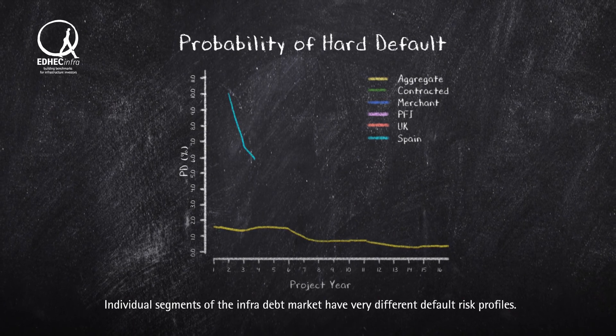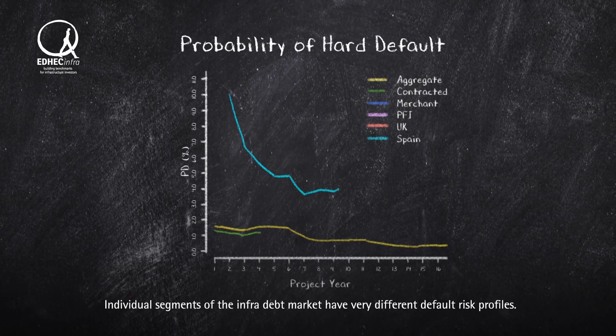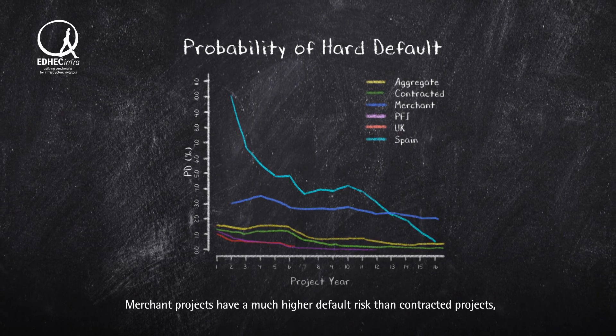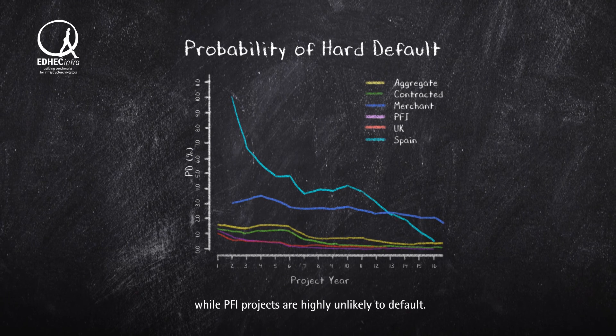Individual segments of the infradebt market have very different default risk profiles. Merchant projects have a much higher default risk than contracted projects, while PFI projects are highly unlikely to default.